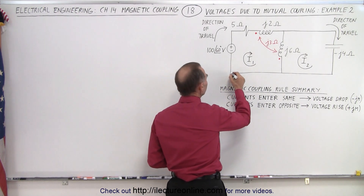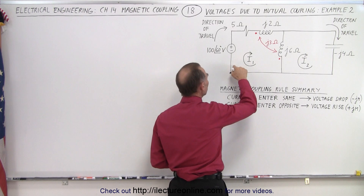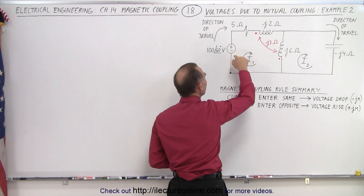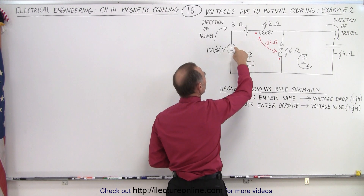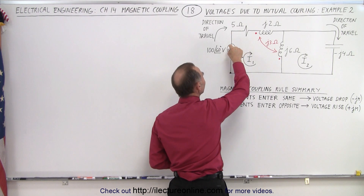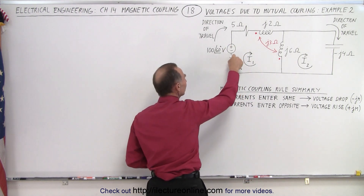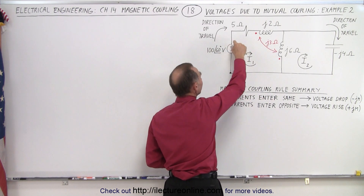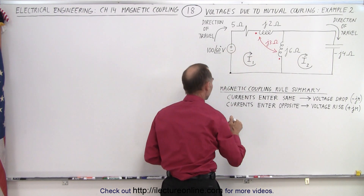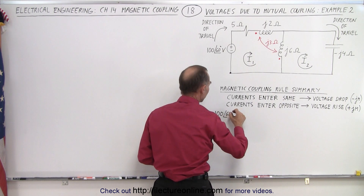You need to pick a point to start and remember the rules. When you cross a power supply or voltage source, you look at the signs of the source. If you travel from the negative to the positive, regardless of the current direction, that is a voltage rise. So we have 100 volts with a phase angle of 60 degrees.